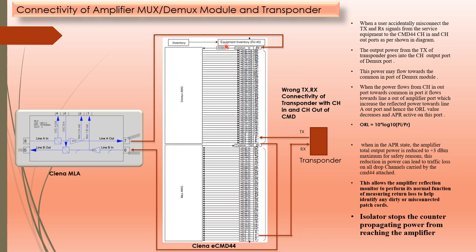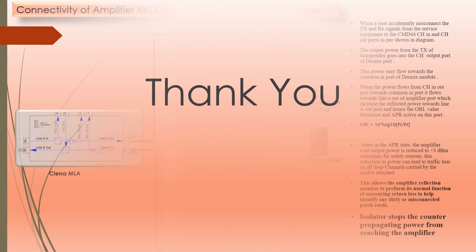The isolator prevents the backflow of any light from any output port toward the common input port. This allows the amplifier reflection monitor to perform its normal function of measuring return loss, helping identify dirty or misconnected patch cords. The isolator stops counter-propagating power from reaching the amplifier. Because the isolator does not allow any light to flow backward towards the common input port, this is its key importance and significance.